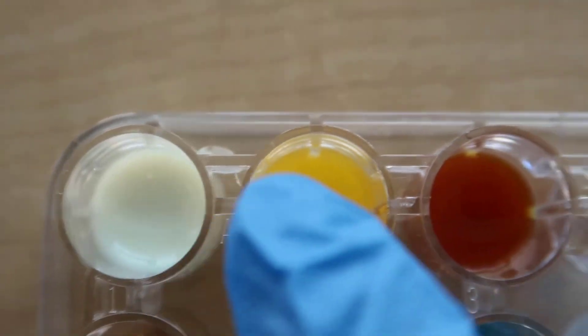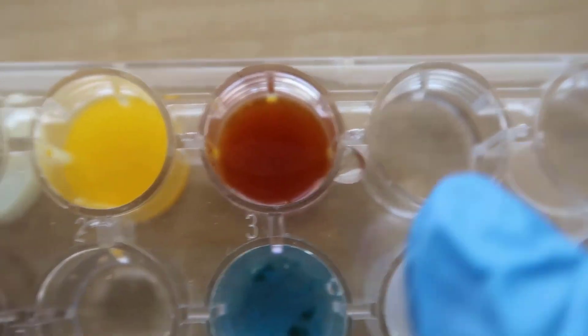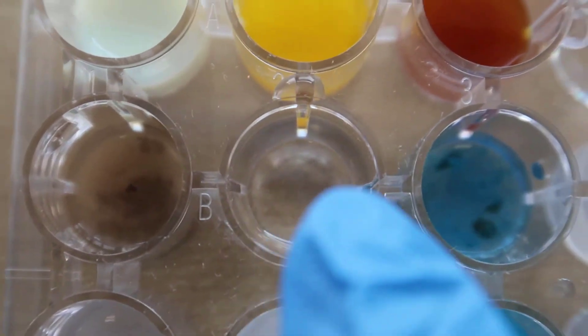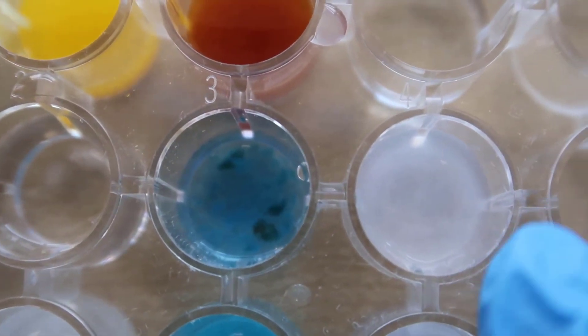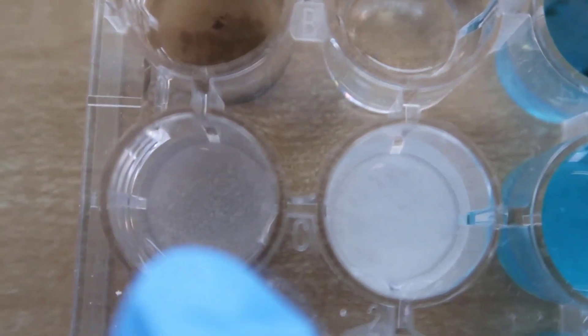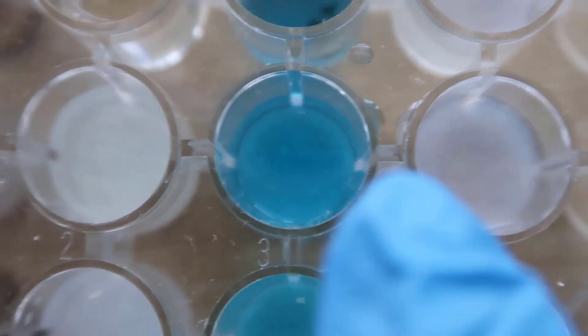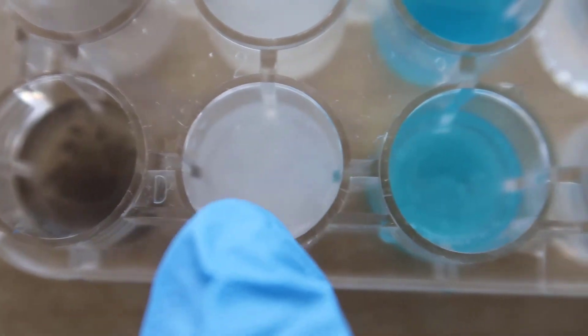So this was the KI. This is the NaOH. You can see this a little bit better. This was the Na2CO3. And then this was the Na3PO4 row.